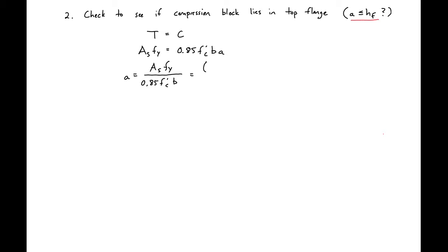So we had a total amount of steel 7.62 square inches times our FY 60 KSI divided by 0.85, 0.85 times our F' C 4 KSI times our B which was 52 inches. And remember this B is the width of our compression region. So for us with positive bending the top of our beam is in compression. So our BF here or our B is equal to our BF.